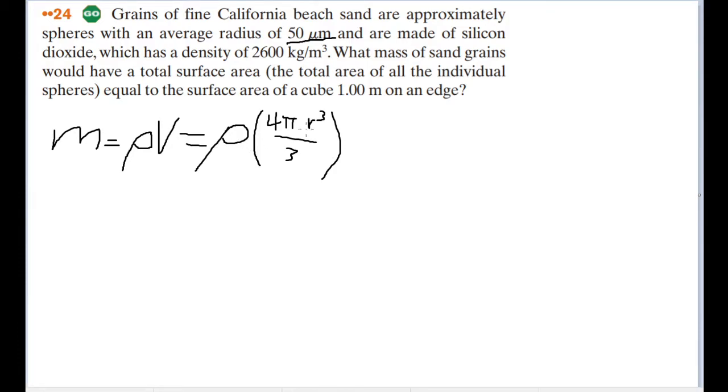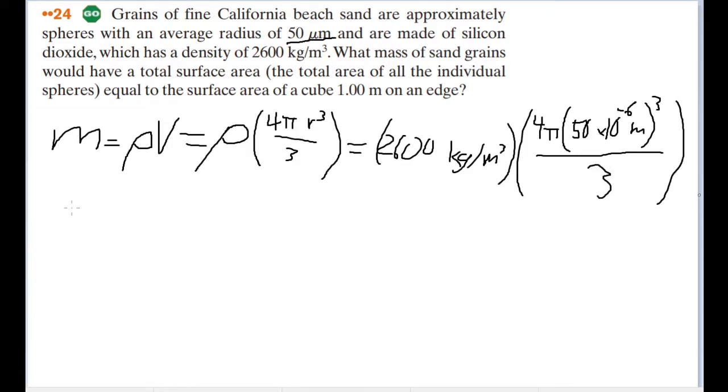So if you plug in the values we have here for the density and the radius, then our mass becomes 2,600 kilograms per cubic meter, as given by the problem, times 4 pi times 50 microns for the radius. So that's 50 times 10 to the negative 6th of a meter, and cube that whole thing. And that is divided by 3. And plugging this into our calculator, the mass we get for one grain of sand is 1.36 times 10 to the negative 9 kilograms.